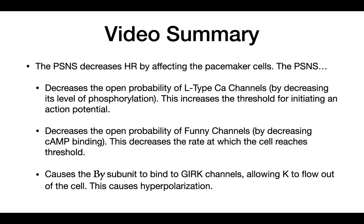In summary, the parasympathetic nervous system decreases the heart rate by affecting the pacemaker cells in three ways. The first way is by decreasing the level of phosphorylation of the L-type calcium channels, which results in an increase of the threshold for initiating an action potential — it's harder to start an action potential. The second way is by decreasing the amount of cyclic AMP binding on the funny channels, which decreases the rate at which the cell reaches threshold. The third way is by allowing the beta-gamma subunit to bind to the GIRK channels, allowing potassium to flow out of the cell and causing hyperpolarization. All three mechanisms work together to decrease the heart rate. I hope this helped — thanks for watching and see you next time.